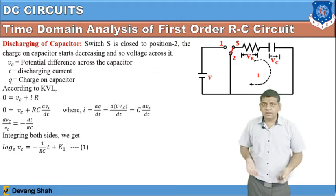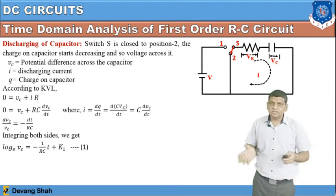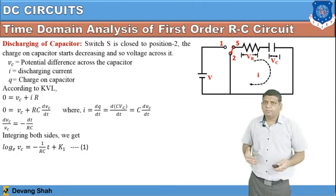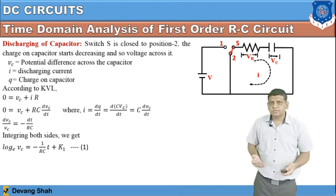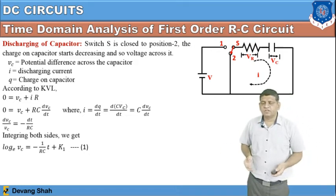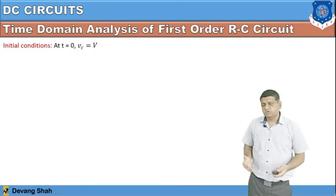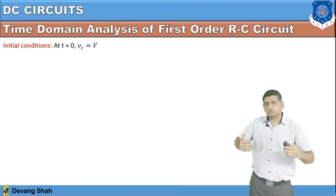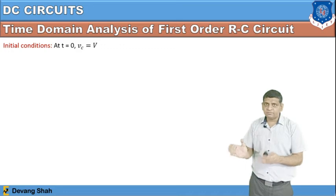Since I equals dQ/dt, we have I equals C·(dVc/dt). Substituting: 0 equals Vc plus R·C·(dVc/dt). Rearranging: dVc divided by Vc equals minus dt divided by RC. Multiplying both sides by minus one and integrating: ln(Vc) equals minus (1/RC)·t plus K1. The integration constant K1 is found from the initial condition, where at T equals zero, the capacitor is fully charged to voltage V.